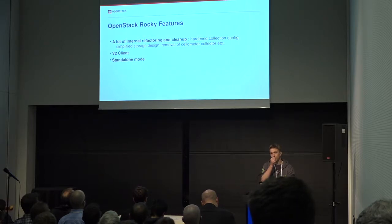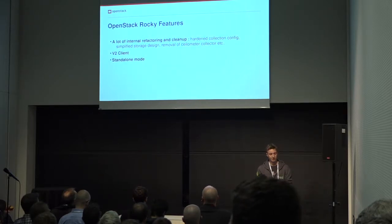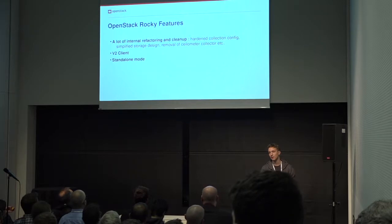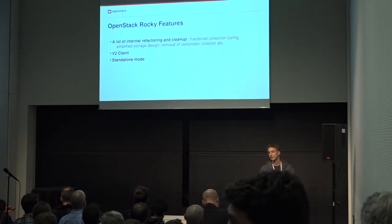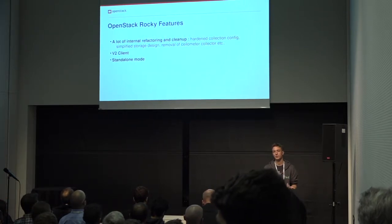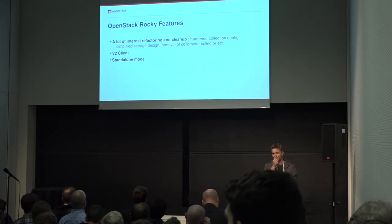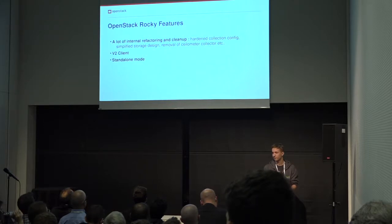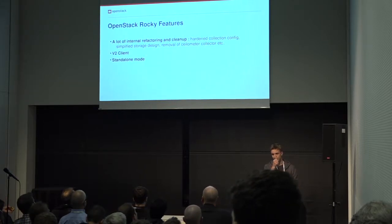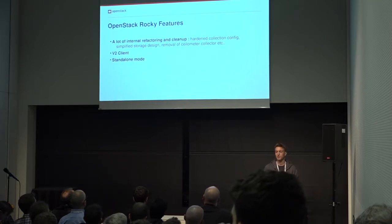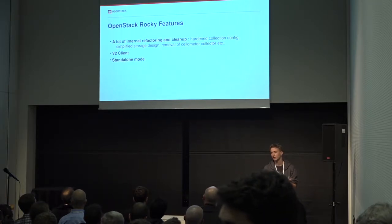The Rocky release has seen a few new features. The more important ones are the internal refactoring and cleanup. A lot of legacy code has been removed, like the Ceilometer Collector, so you can't use the Ceilometer API anymore, which has been deprecated since Ocata. The storage has been refactored, and a new client is available — a Python library that should be easier to use and is integrated with the OpenStack client. If you see 'openstack rating', that's us.